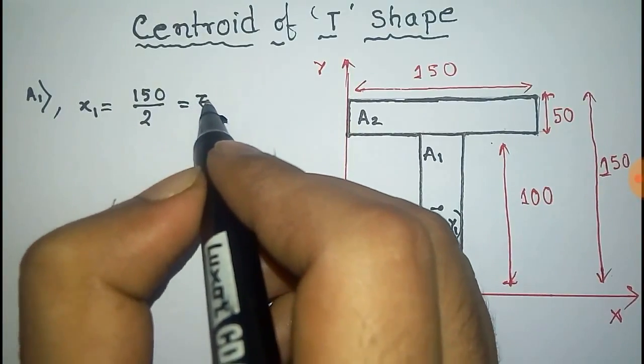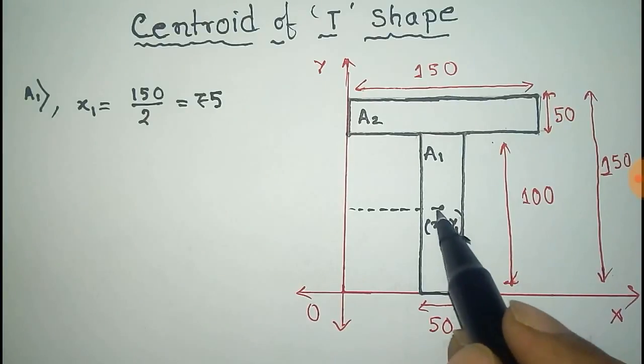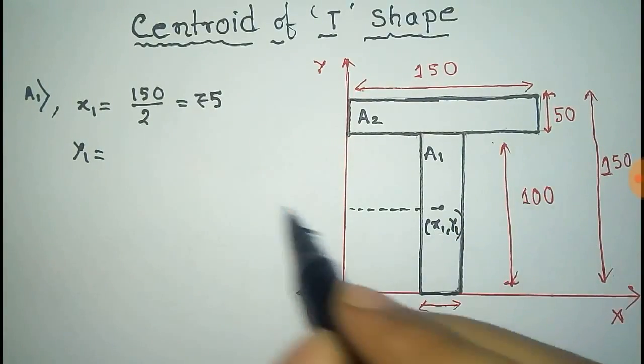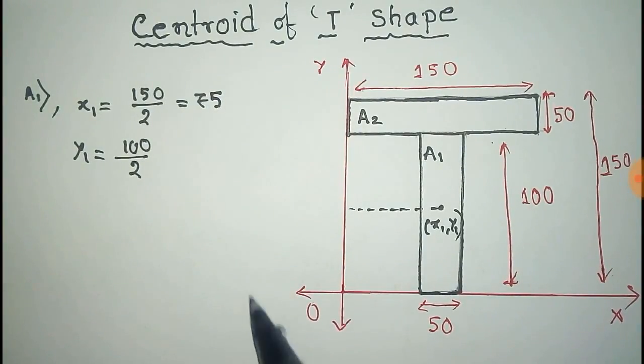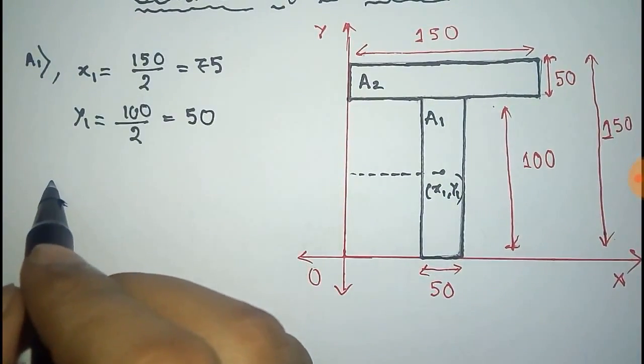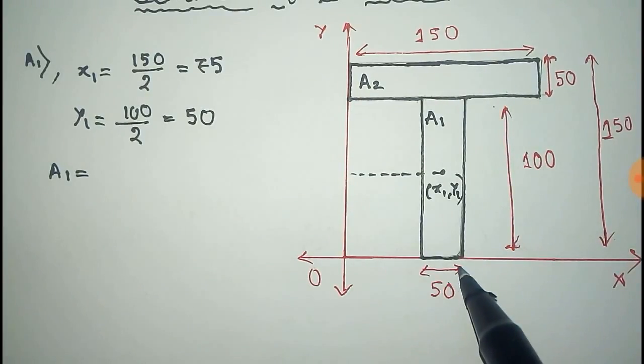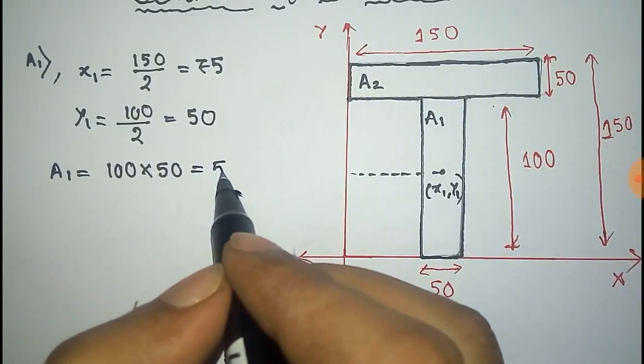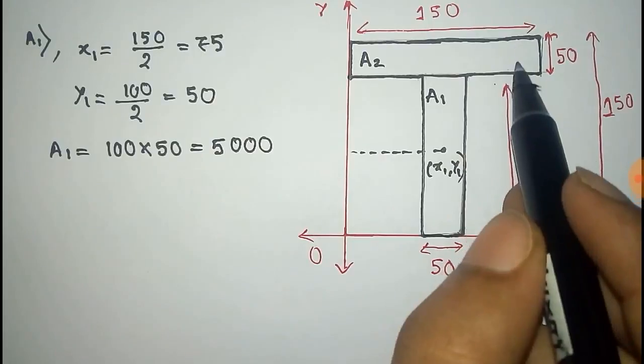And y1 is 100 by 2 because this is at the middle of the rectangle, so this equals 50 units. Now the area of A1 is equal to 100 times 50, which equals 5,000 square units.